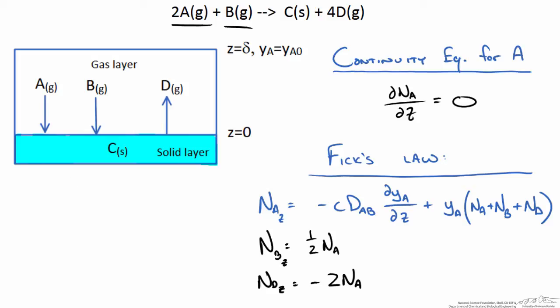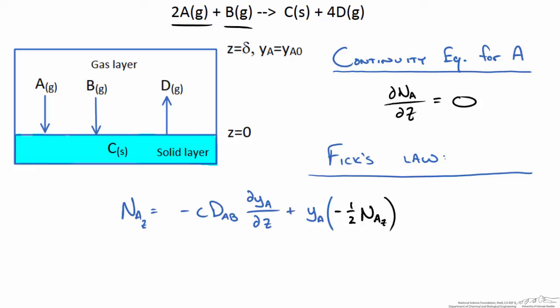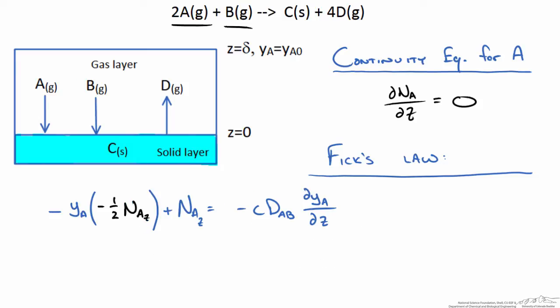Now we can plug these into our Fick's law equation and simplify this. You can see because this is non-zero we do have a bulk flow component and therefore do have both diffusive flux and a convective flux of A through this gas layer. We are going to bring this term over to the left side and group the flux of A in the z direction together. We can bring this term back over and we have a relationship for the flux of A in the z direction.